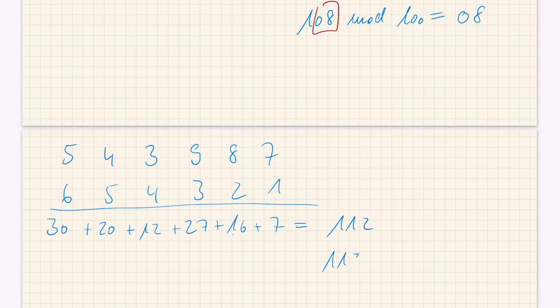112. And again we take this 112 modulo 100. Then we get our rest of 12. So we add this 12 at the very end, and this is our complete student number.